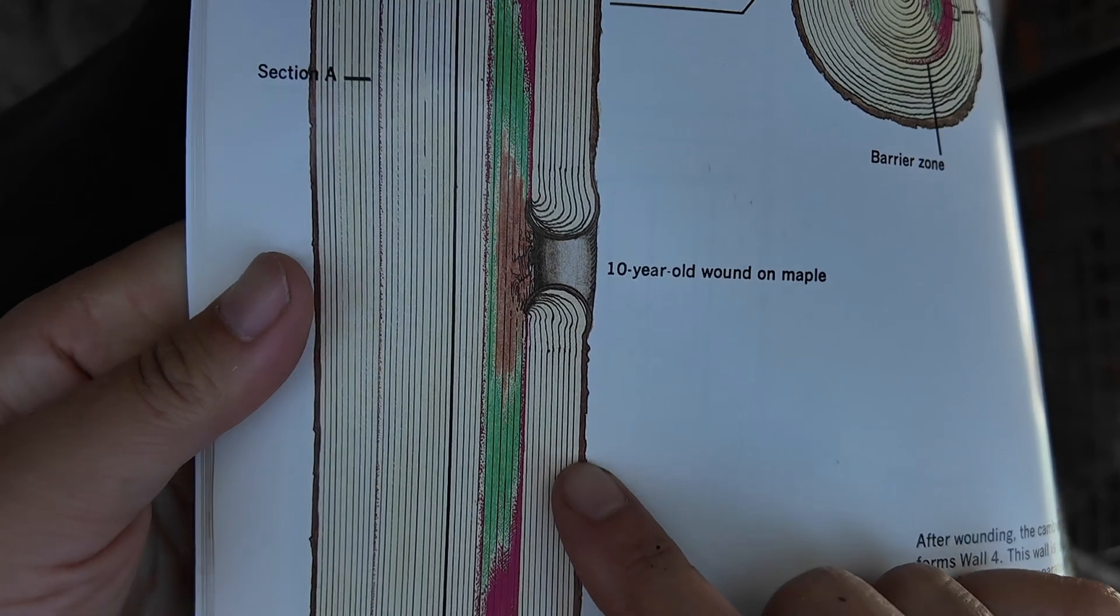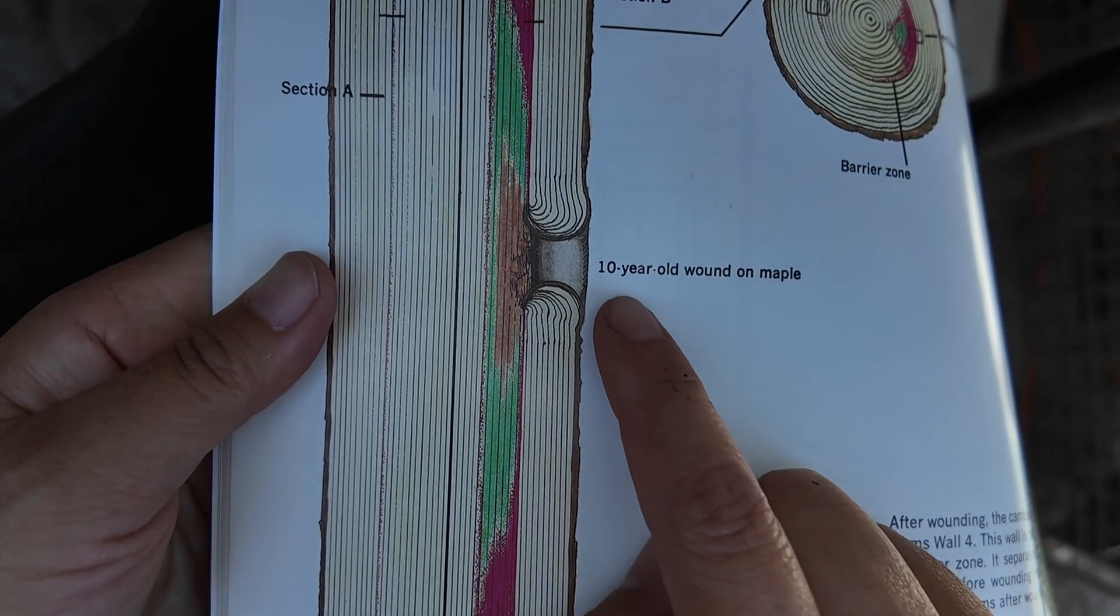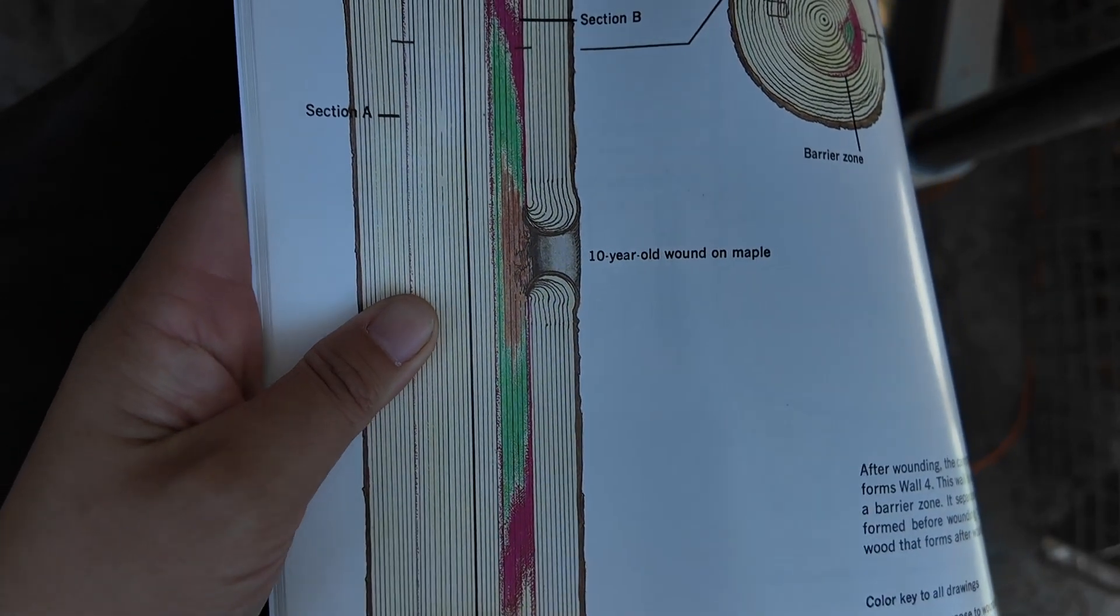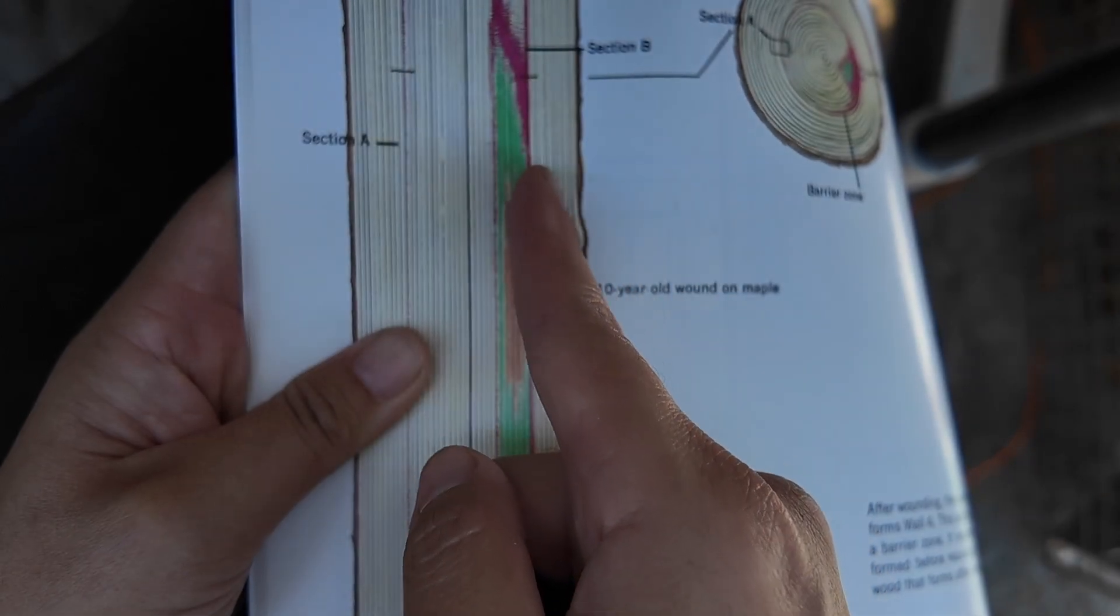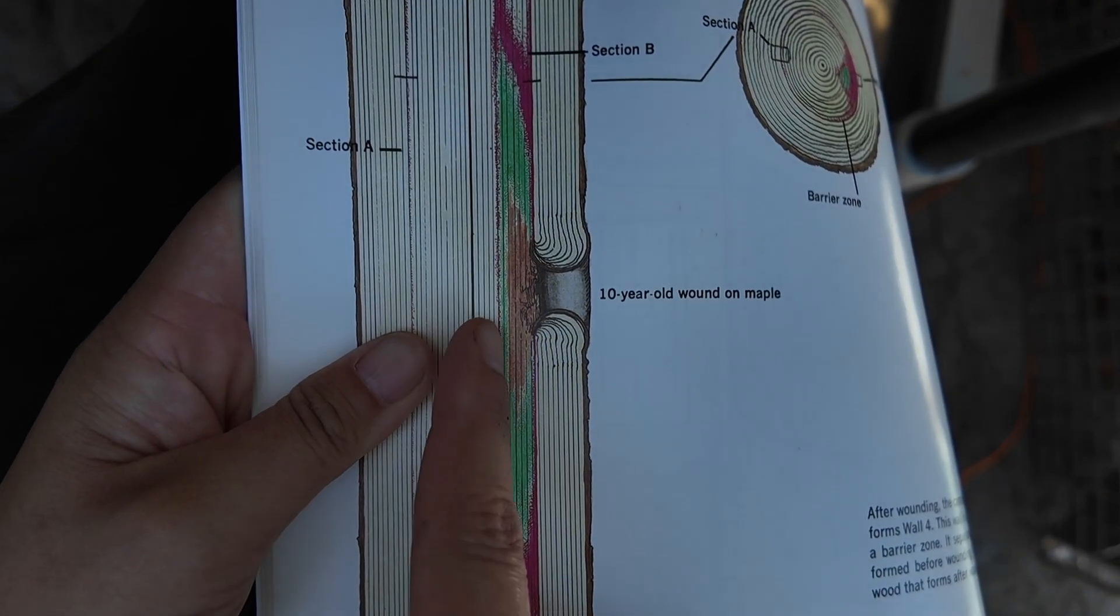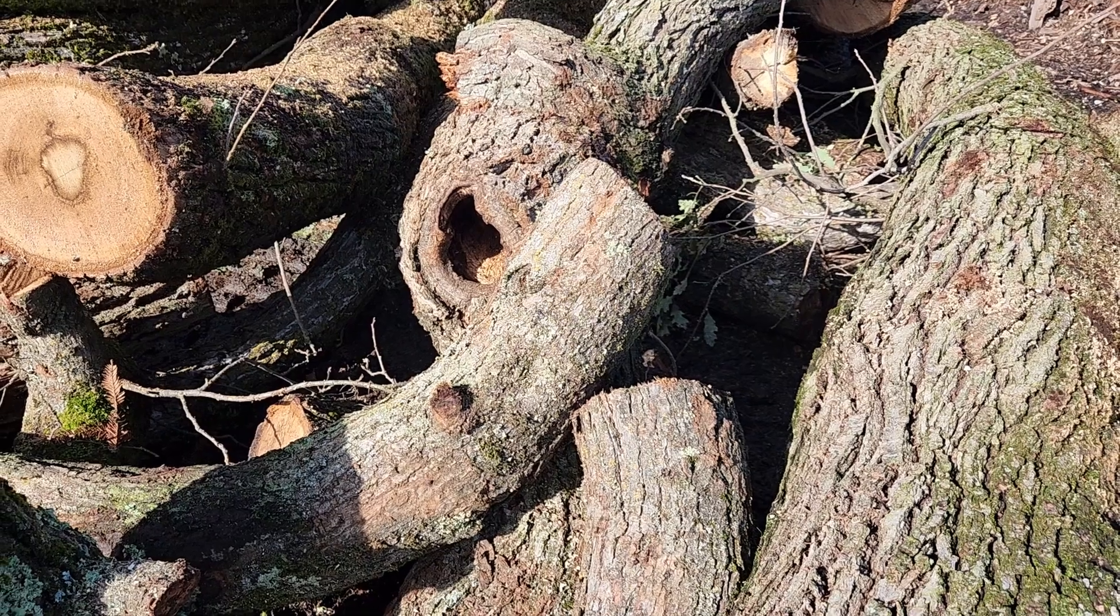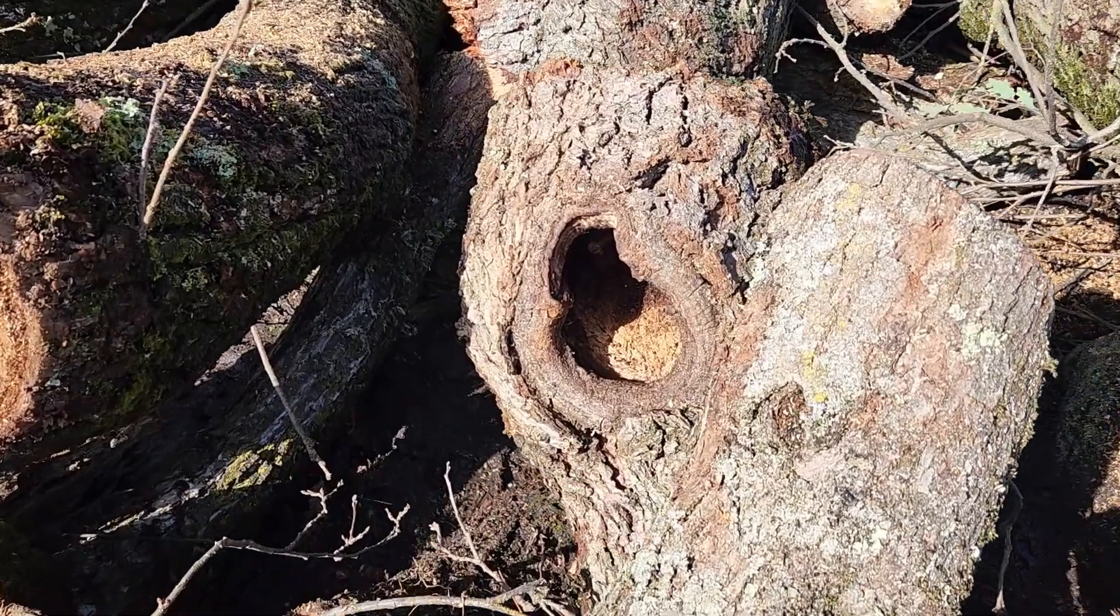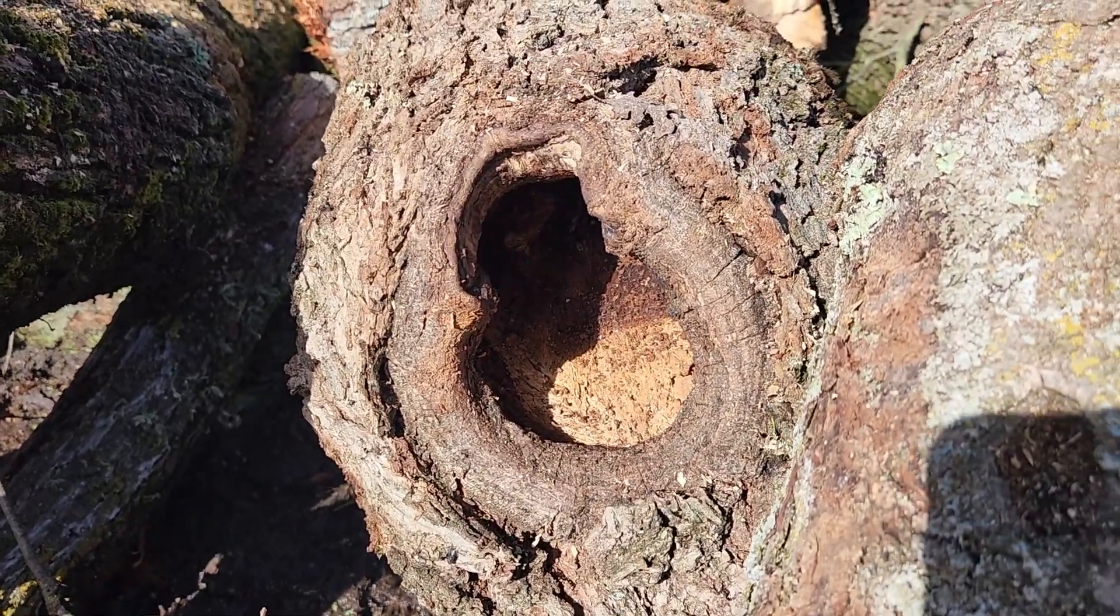In this diagram it shows that there was an injury here about 10 years ago, and you had these zones of infection or attack. But wall four, which formed the year after the injury, was able to successfully prevent any pathogens and things like that from entering the new wood. As long as the tree is able to produce a lot of new tissue afterwards, it can have a hollow center that doesn't completely destroy its integrity.